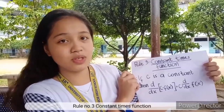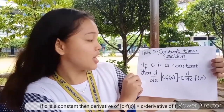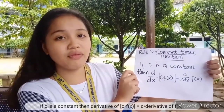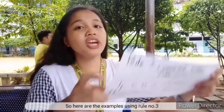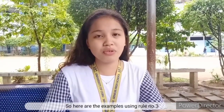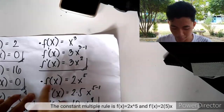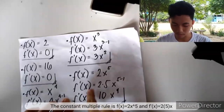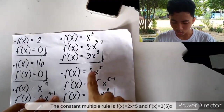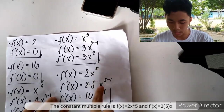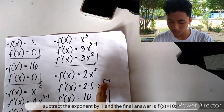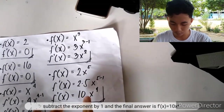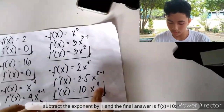Rule number 3: Constant times function rule. If c is a constant, then the derivative of c times f(x) equals c times the derivative of f(x). For example, f(x) equals 2x to the power of 5, so f prime(x) equals 2 times 5x to the power of 4, which gives 10x to the power of 4.